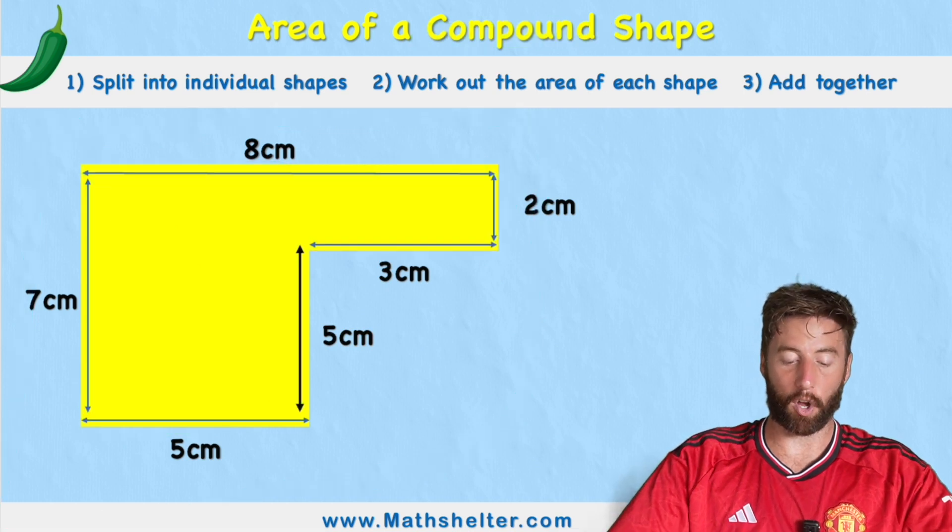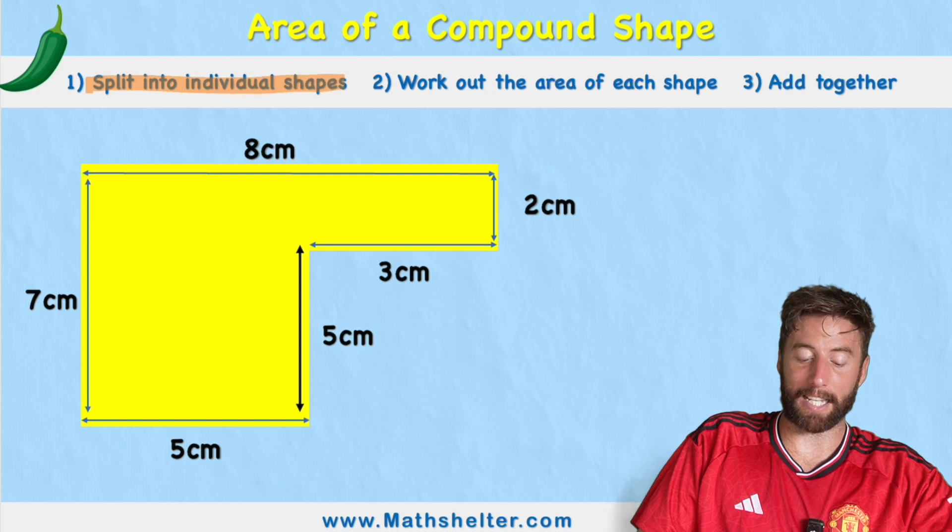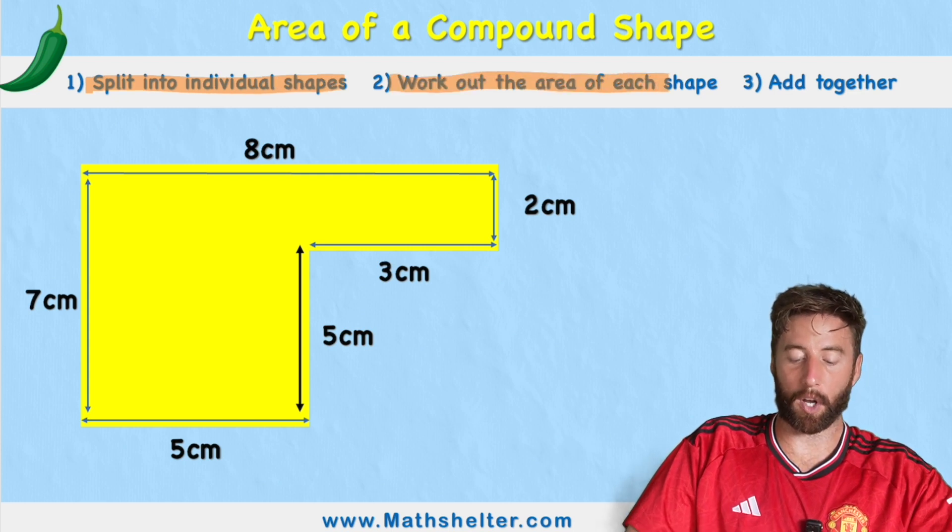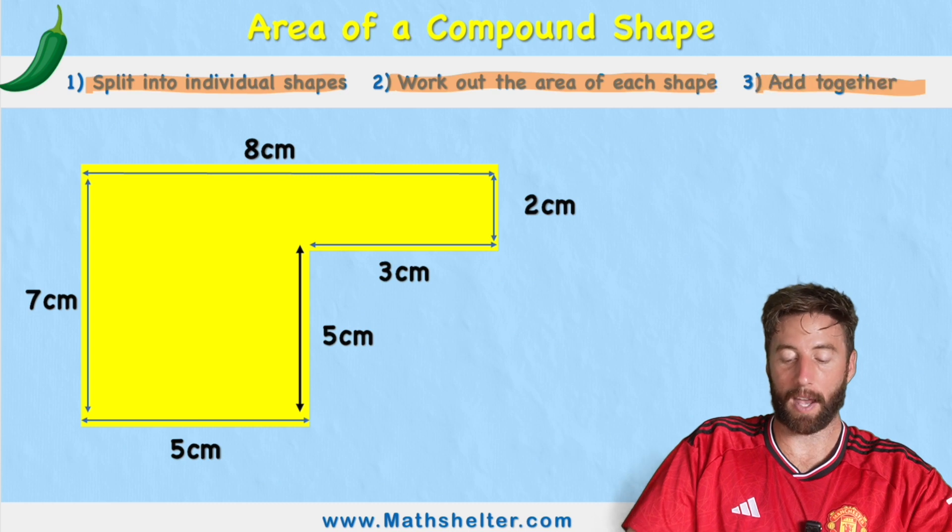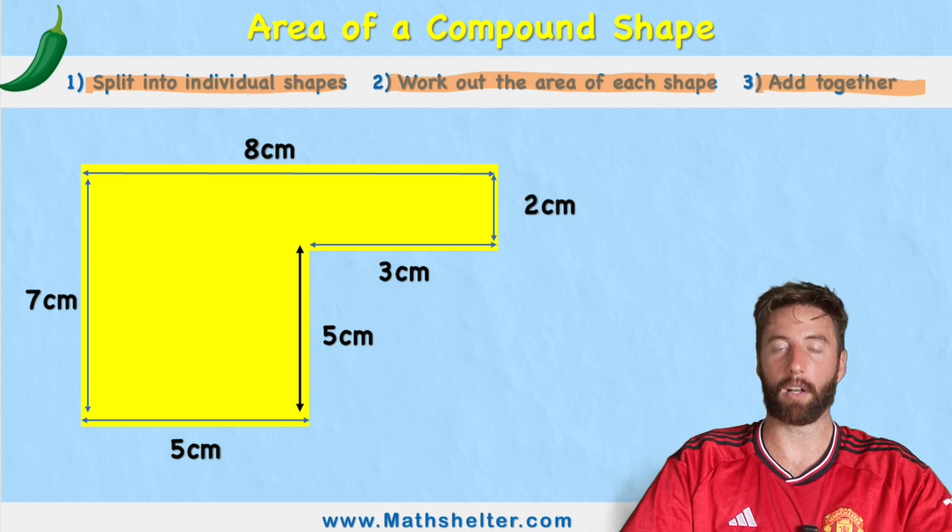So when we're measuring the area of a compound shape we need to follow these steps. The first step is to split into the individual shapes that it started with. Then we're going to work out the area of each shape and then we're going to add that together to get the area of the total of our compound shape.